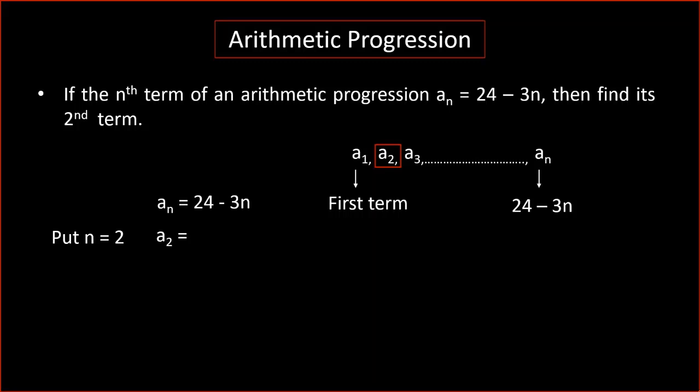a2, where n is 2, is equal to 24 minus 3 into 2. So we substitute 2. a2 is equal to 24 minus 3 into 2 is 6. 24 minus 6 is 18.